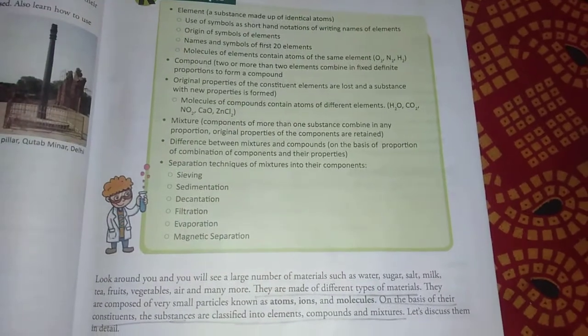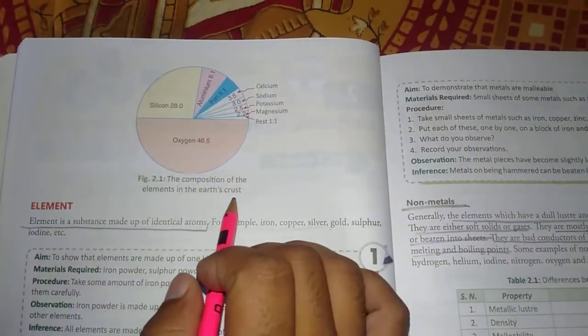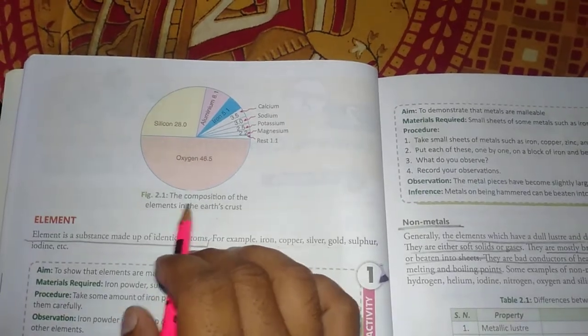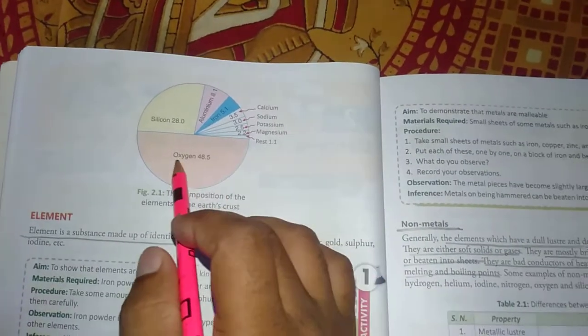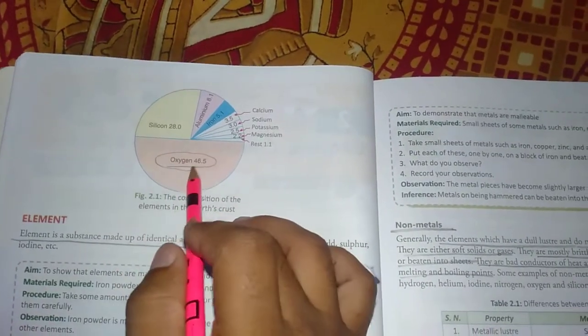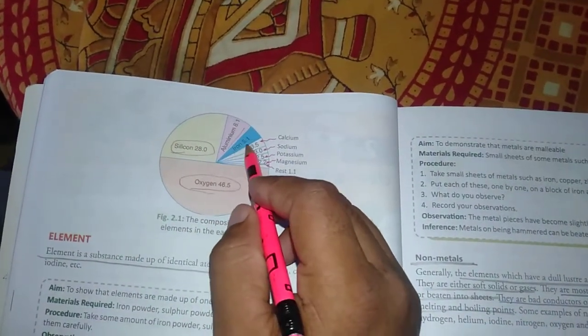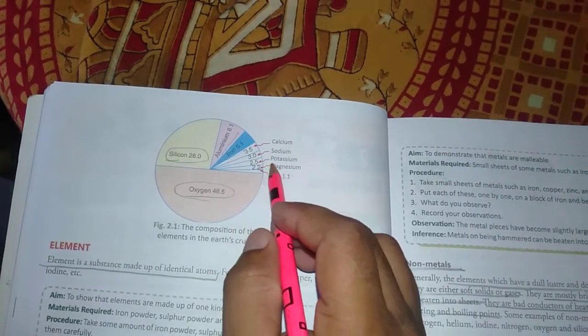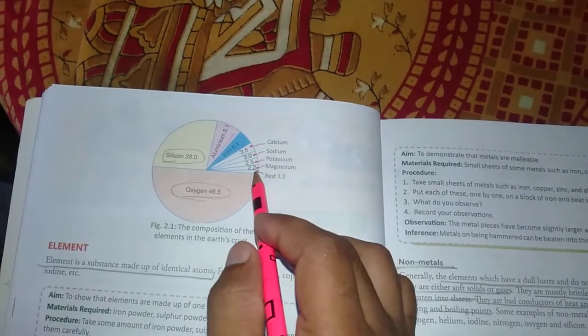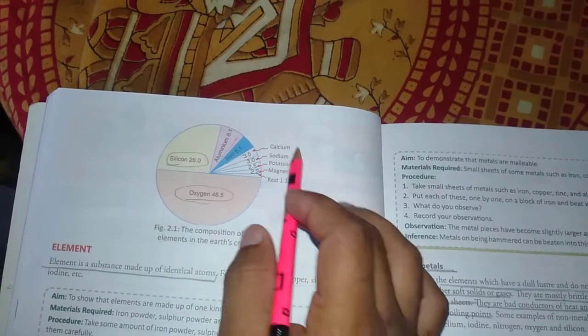Now let's look in detail. This is a chart made by the composition of elements in the Earth's crust. In the Earth, the elements include oxygen, silicon, aluminum, iron, calcium, sodium, potassium, magnesium, and others comprising the remaining percentage.